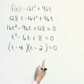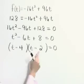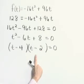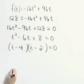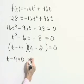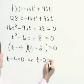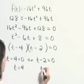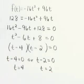Now to use our zero factor property. If we have the product of two things equal to zero, then one or the other or both are zero. So t - 4 = 0 or t - 2 = 0, giving t = 4 or t = 2.